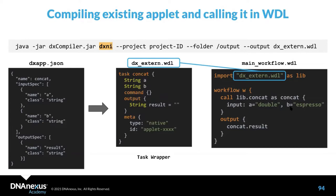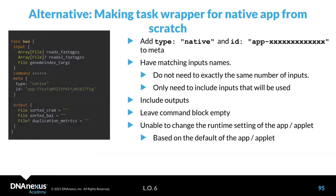That's how you use an existing applet. An alternative, if you want to make a task wrapper from scratch, is to add a meta section with type native and the app ID, have the command part empty, and fill in inputs and outputs in the appropriate format.